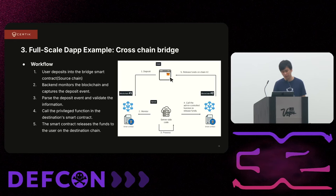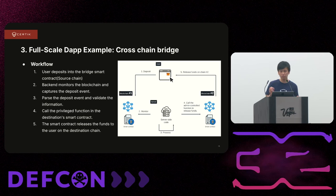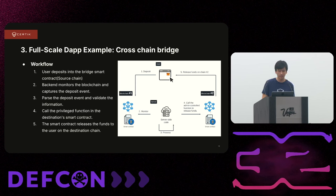The majority of DApps in 2024 are full-scale DApps compared to 2020's first DeFi summer when there were many API-less DApps. One example of a full-scale DApp is a cross-chain bridge, which allows users to transfer tokens across different blockchains. Because smart contracts on different blockchains cannot talk to each other, bridges require a backend component. The workflow is: the user deposits tokens to the source chain contract, the backend monitors the deposit event, and if everything checks out, it calls the privileged function on the destination chain to release the funds.